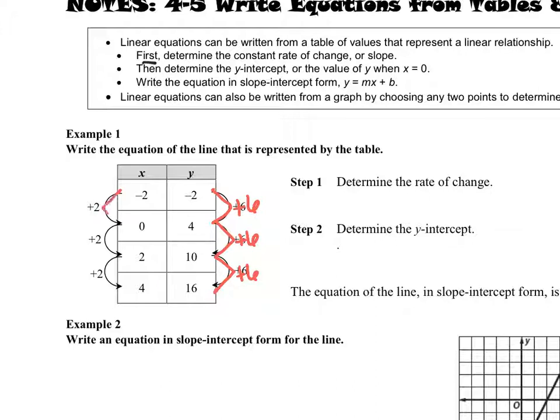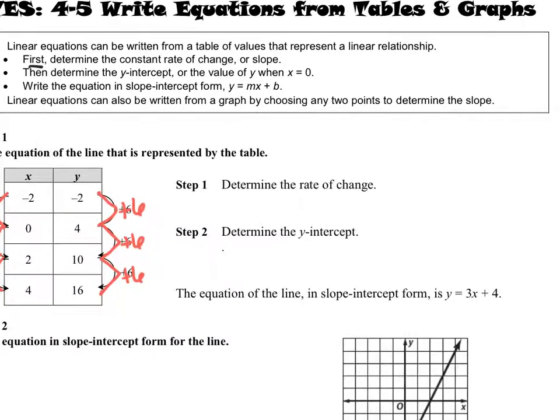And then your change in x is this plus 2, plus 2, plus 2. So your constant rate of change is your change in y over your change in x. So we got that as 6 over 2, which simplifies to 3.